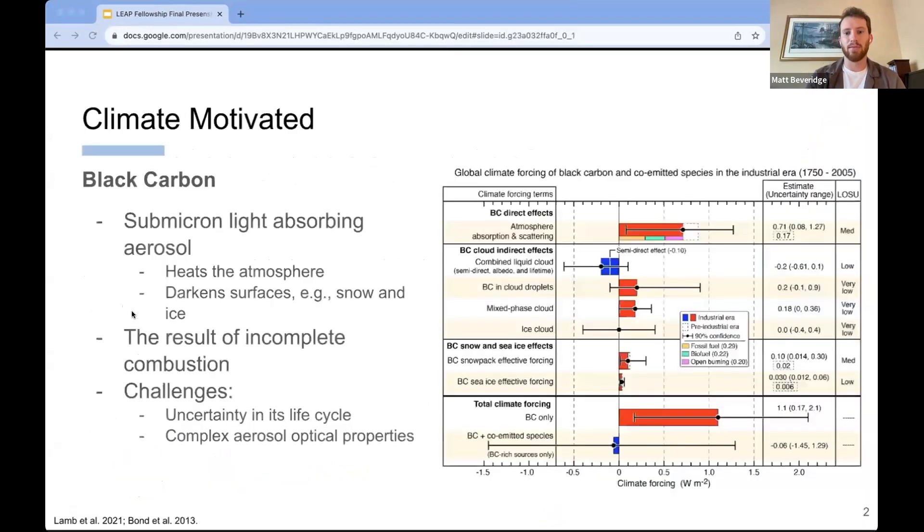Specifically, what we've been working on is predicting the optical properties of black carbon. Black carbon is an atmospheric aerosol. It is a darkened color, also known as soot, and it's a light absorbing aerosol. The issue with that is it heats the atmosphere and also darkened surfaces, for example, snow and ice, which in turn heat them. It's the result of incomplete combustion, and it's one of the larger climate forcing aerosols in the atmosphere.